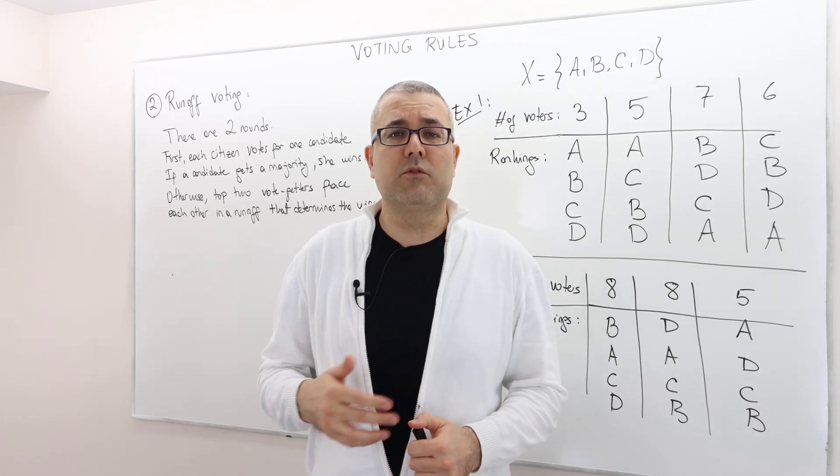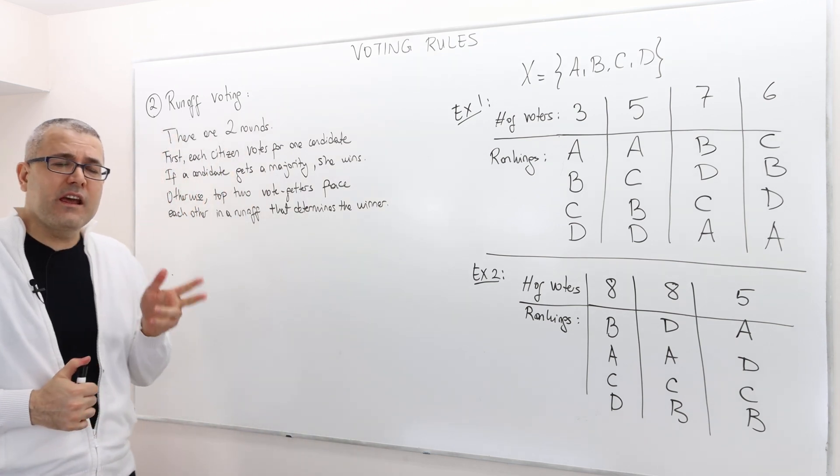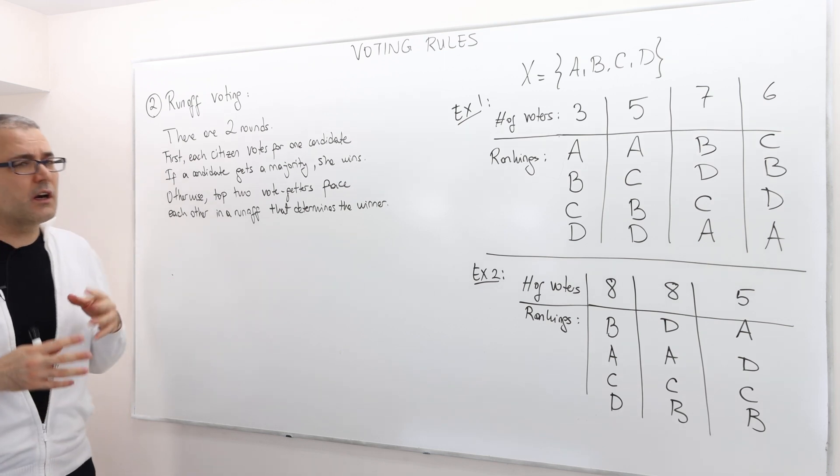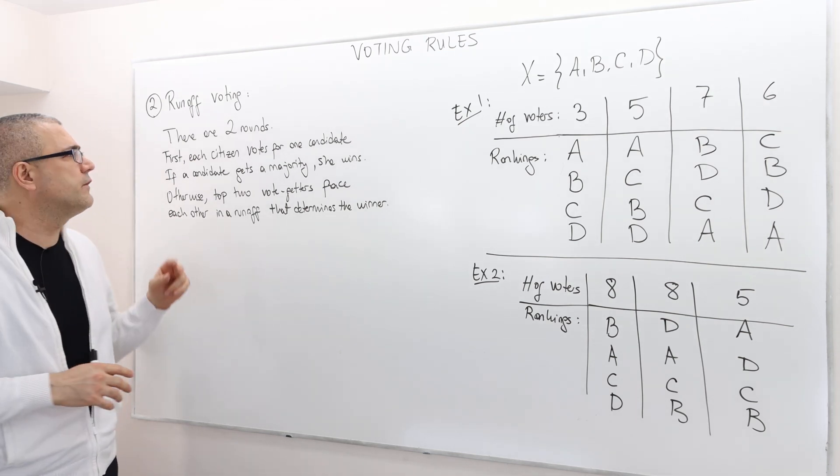Our second voting rule is called runoff voting. This is another very highly used voting rule in reality. There are two rounds, different than plurality.